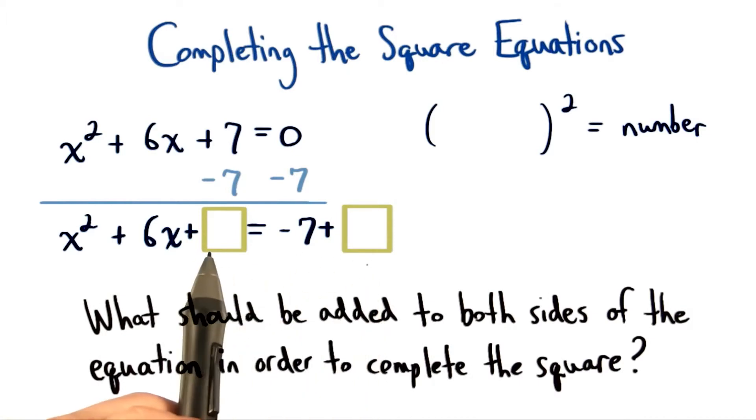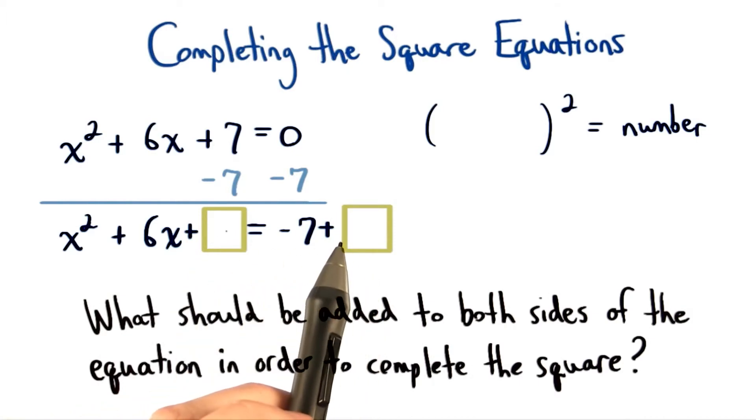Now that we're here, we want to add some amount to both sides of our equation. Remember, we can only perform the same operation to the left-hand side of the equation and the right-hand side of the equation in order for our equation to remain balanced.